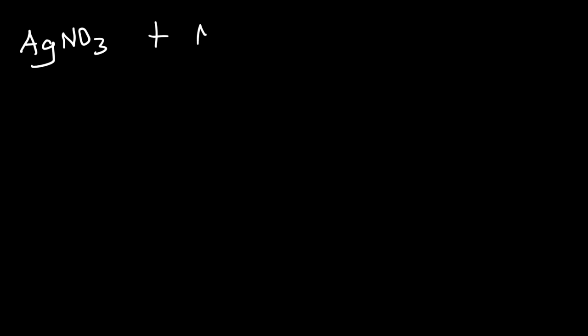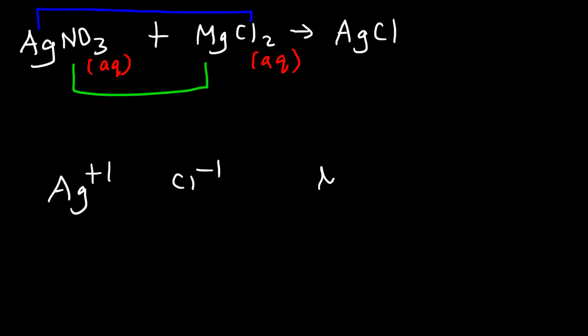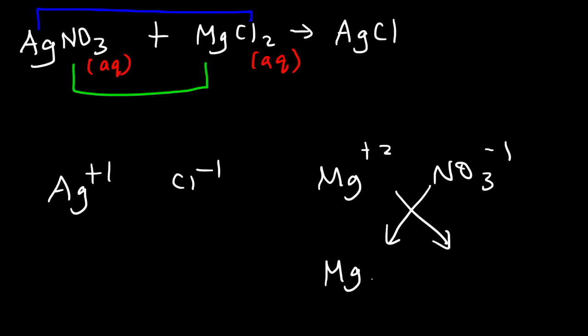In double replacement reactions, if silver nitrate reacts with magnesium chloride — both aqueous — Ag pairs up with Cl. Ag has a +1 charge and Cl has a -1 charge, so they combine in a one-to-one ratio producing AgCl. Magnesium pairs up with nitrate: Mg has a +2 charge and nitrate has a -1 charge, giving Mg(NO₃)₂. When multiple polyatomic ions appear in a compound, enclose them in parentheses.